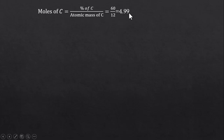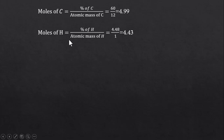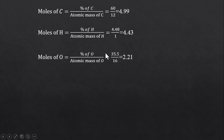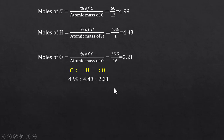Similarly, moles of hydrogen can be calculated and come out to be 4.43, and the moles of oxygen are 2.21. So the ratio between carbon, hydrogen, and oxygen comes out to be these values.